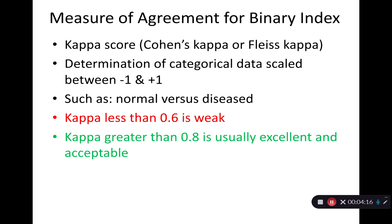A kappa score — Cohen's kappa or Fleiss kappa — can be determined by categorical data, usually on an agreement of plus or minus one, such as normal versus diseased, and can be used in various other aspects. A kappa less than 0.6 is considered to be weak, whereas a kappa greater than 0.8 is usually considered excellent and acceptable.